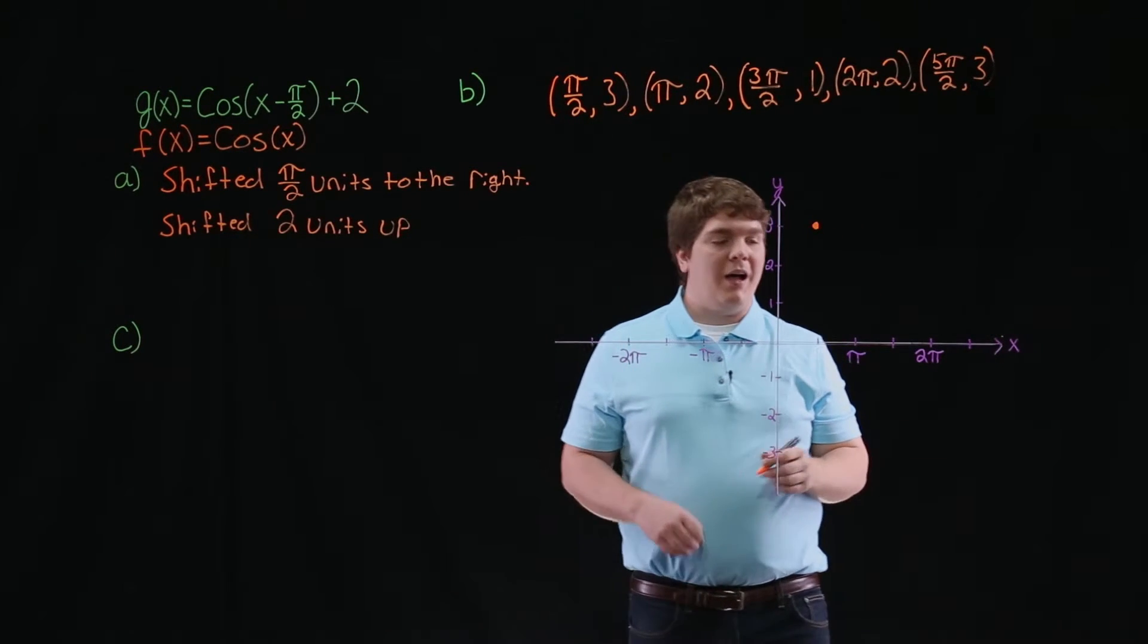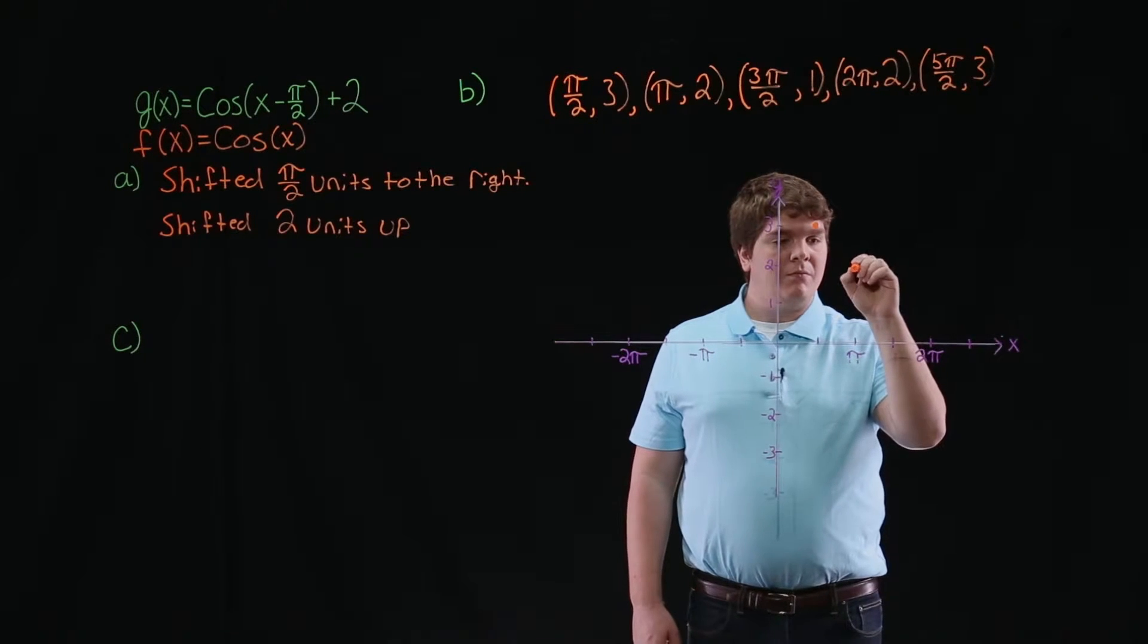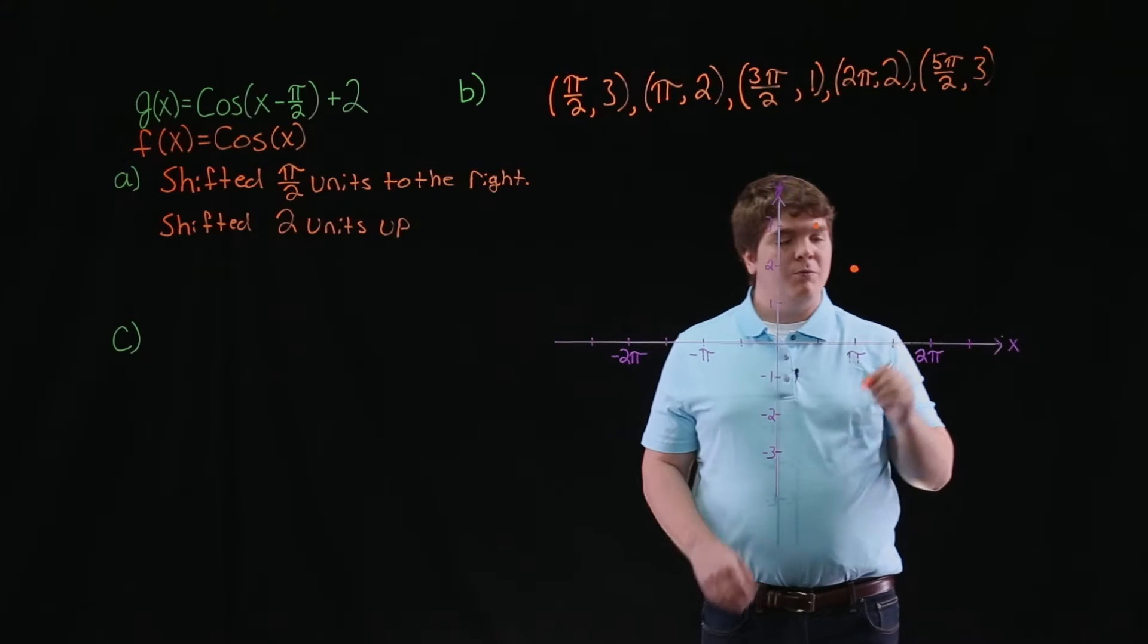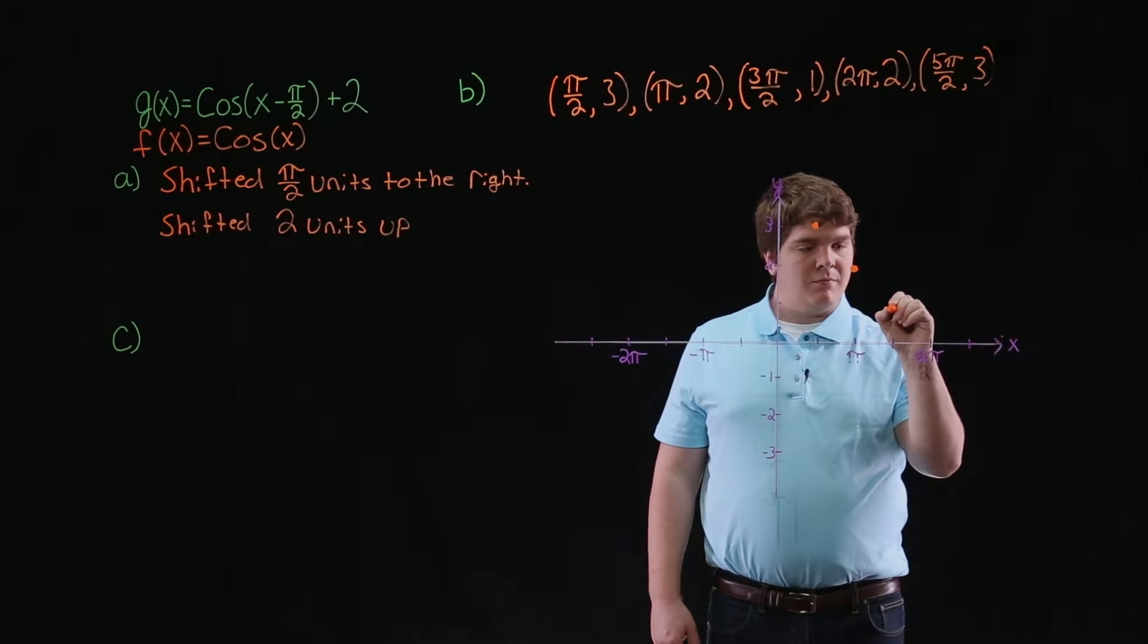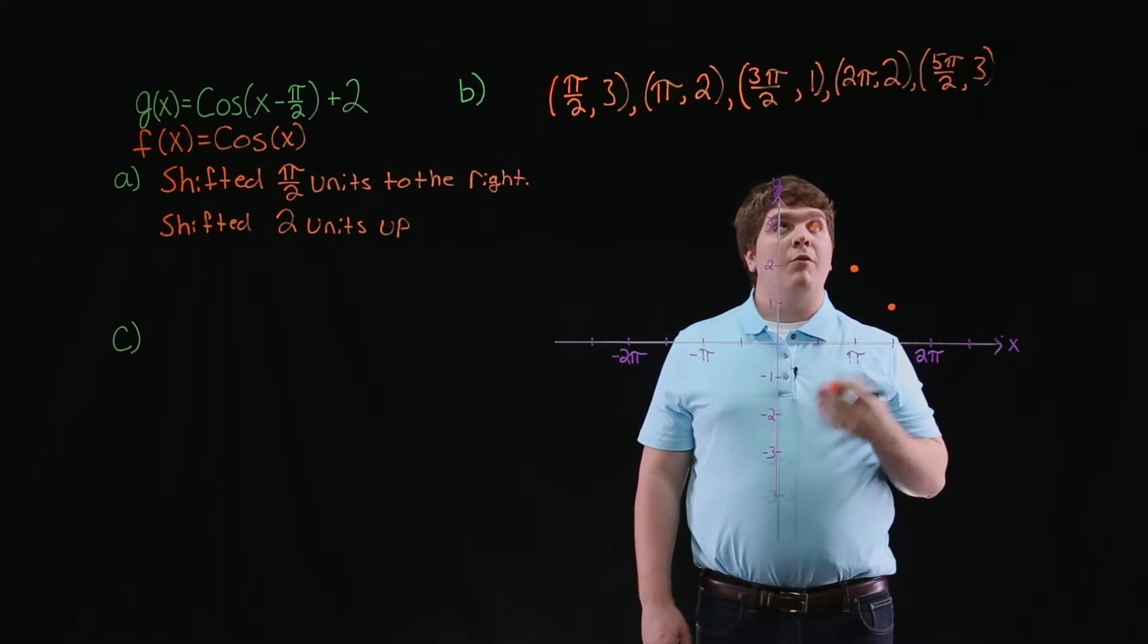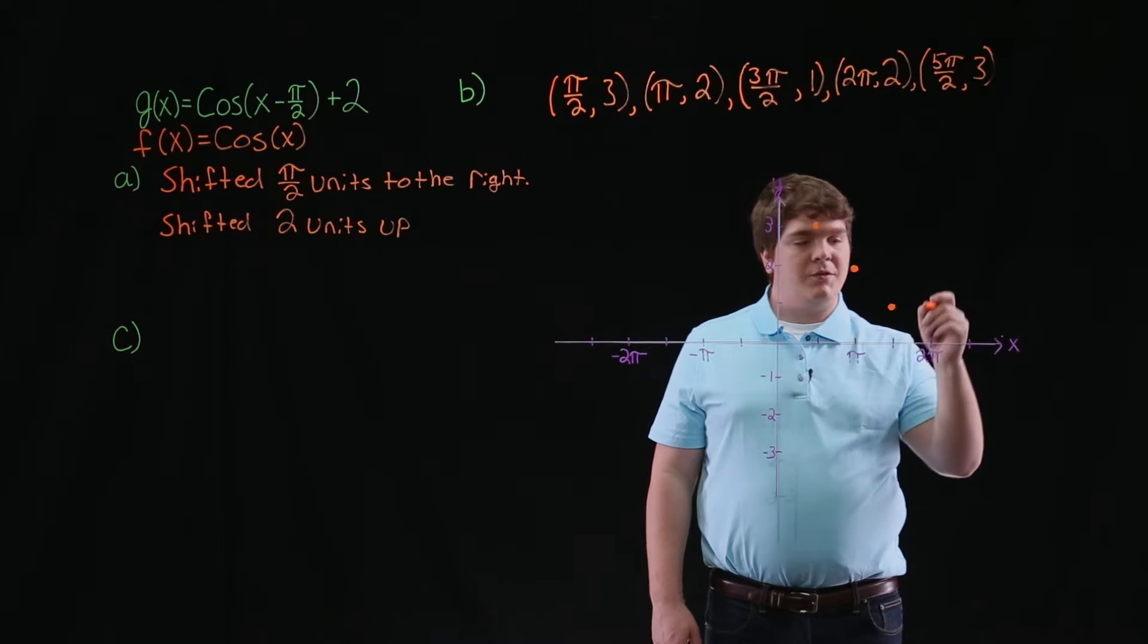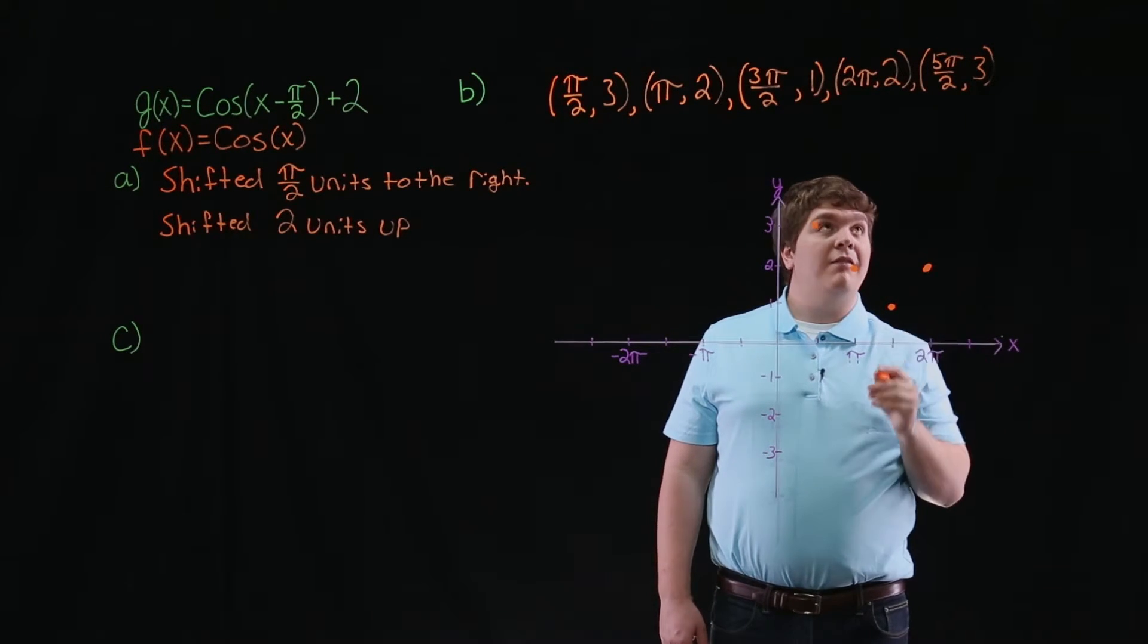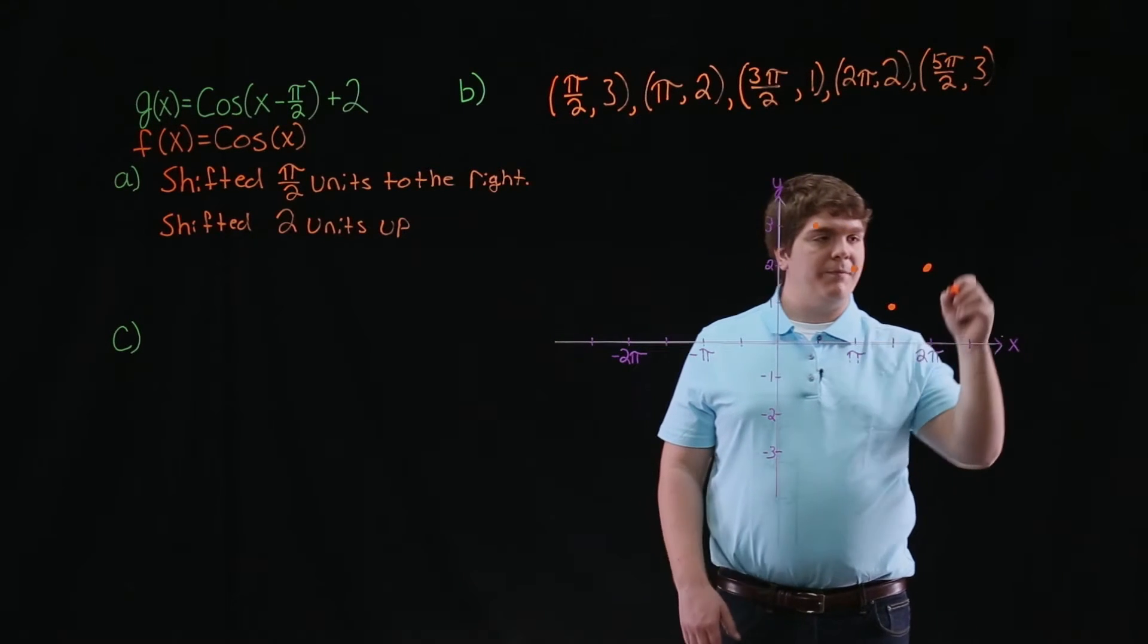Our second point is pi, 2. The third point is 3 pi over 2, 1. The fourth point is 2 pi, 2. And finally, the last point is 5 pi over 2, 3.